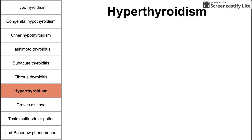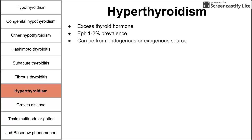Next we'll talk about hyperthyroidism — an overview of symptoms before jumping into specific examples. Hyperthyroidism means excess thyroid hormone, with a prevalence of about 1–2% in the population. It can stem from an endogenous source (the body making too much) or an exogenous source (taking too many thyroid supplements).